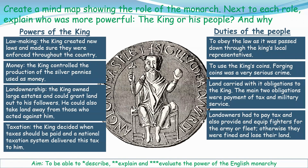The first activity I'd like you to do is create a mind map using this information - it's in the textbook as well, which hopefully you've got running alongside this piece of work. Create a mind map showing the role of the monarch and all the various important roles. Then when you've done that, answer this question: who was more powerful, the king or his people, and why? Pause the video here, go away, and come back when you're done.